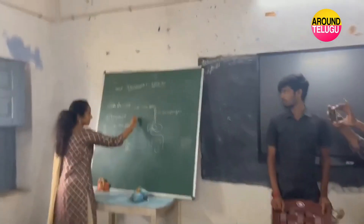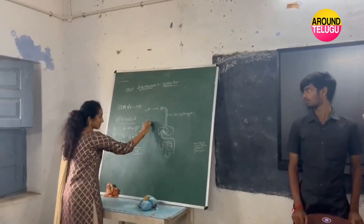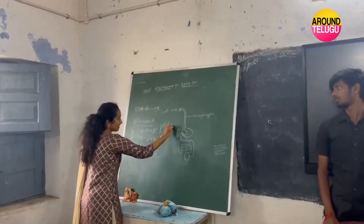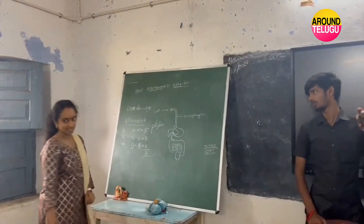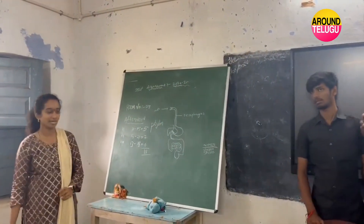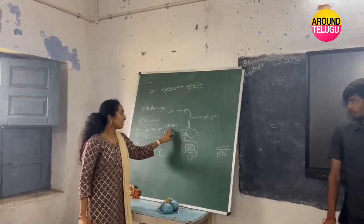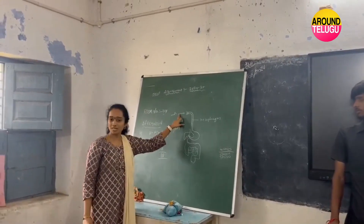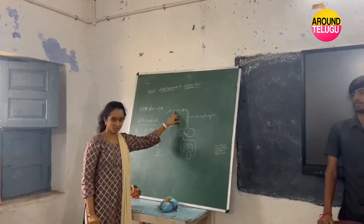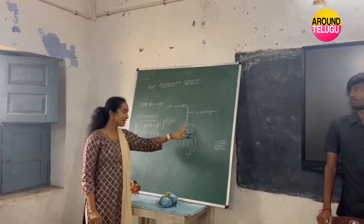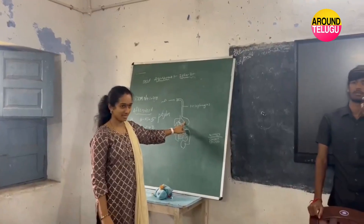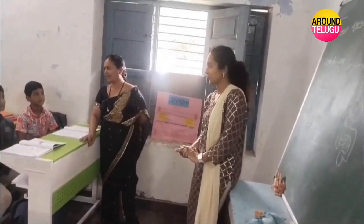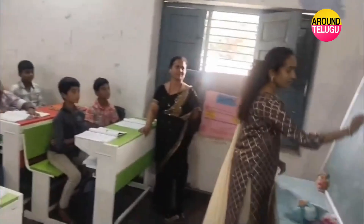P is silent — ptyalin. Now you first digest your food in your mouth, then you start to digest in your stomach. It uses acid ptyalin, it is called ptyalin.